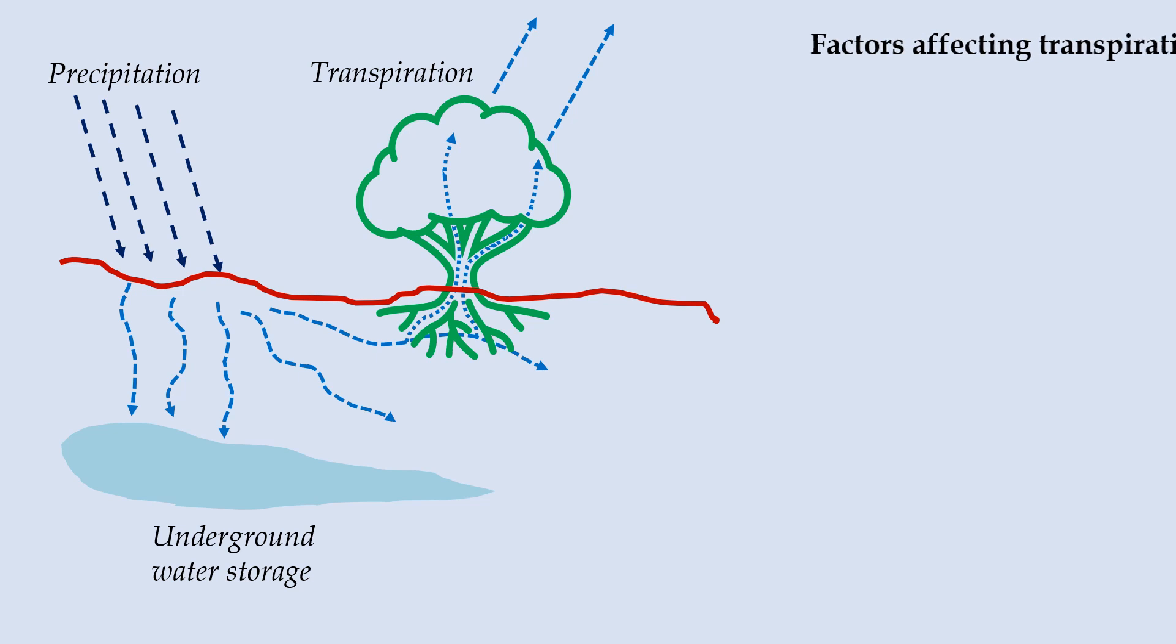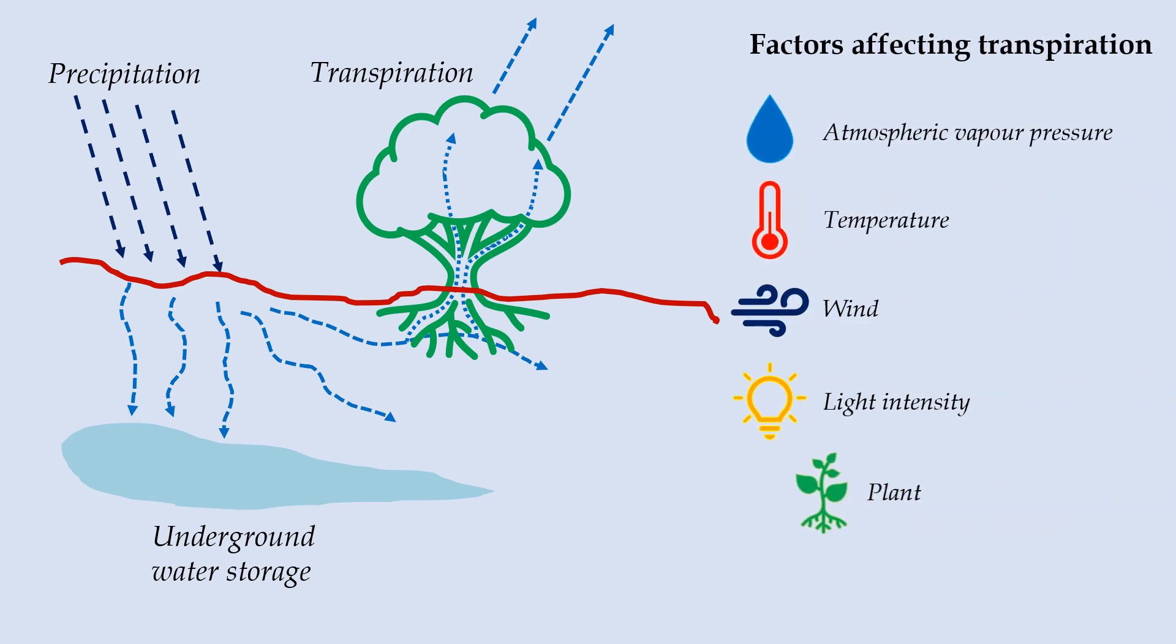The atmospheric vapor pressure, temperature, wind, light intensity, and plant itself are among the factors influencing the transpiration rate.